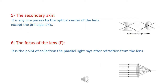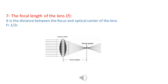The secondary axis is any line that passes through the optical center of the lens except the principal axis. Sixth, the focus of the lens is the point where parallel light rays collect after refraction through the lens. The focal length is the distance between the focus and the optical center.